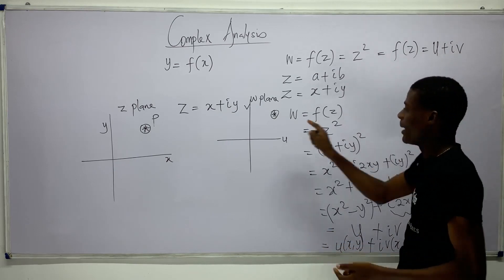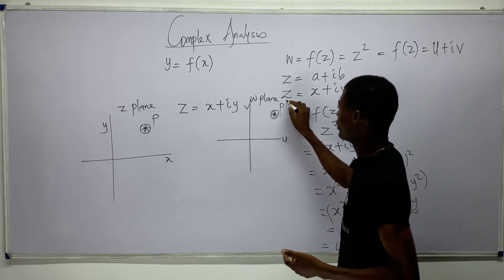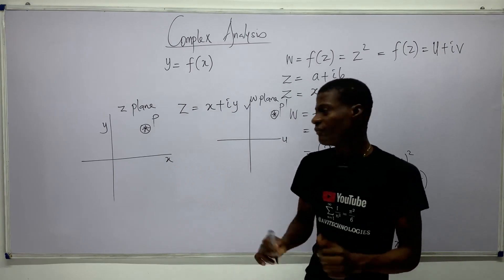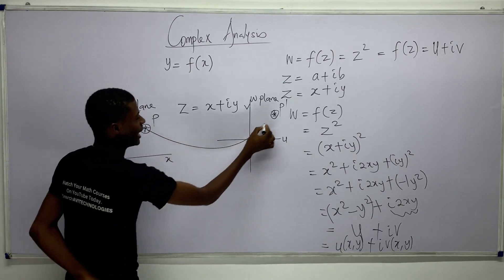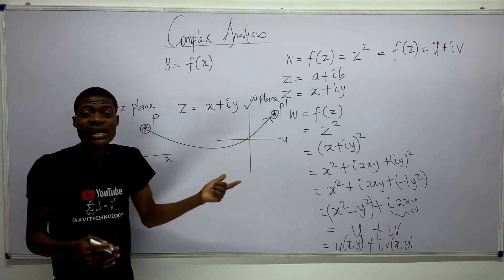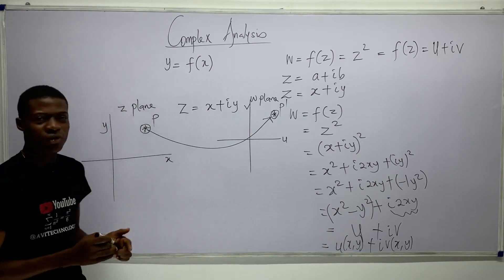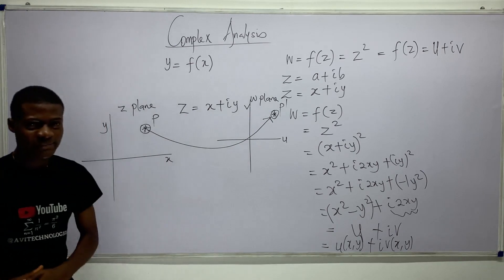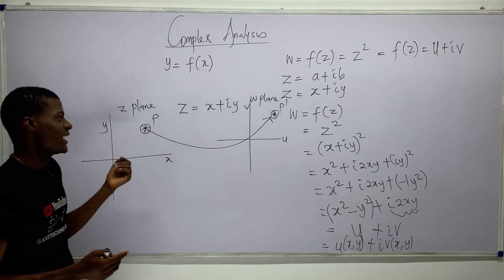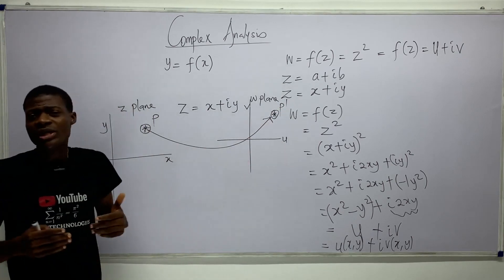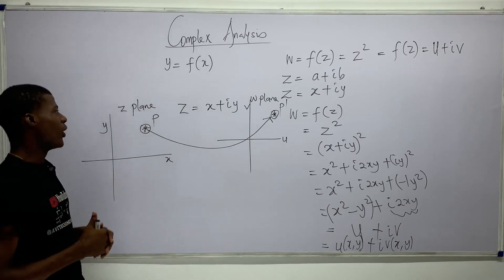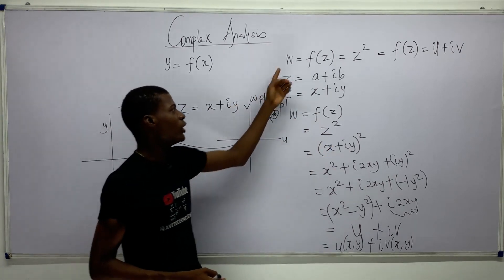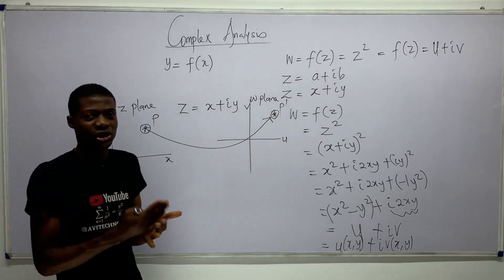We take that result and plot it in the w-plane, giving us the point called P prime. P prime is called the image of P. So we have mapped P onto P prime. This is how we plot graphs of complex functions — two separate graphs, one for the z-plane and one for the w-plane. And w equals f(z) is called the transformation equation.